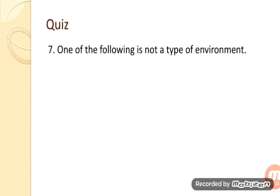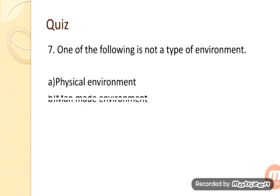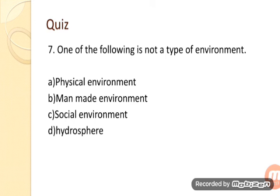Question 7: One of the following is not a type of environment. Option A: Physical environment. Option B: Man-made environment. Option C: Social environment. Option D: Hydrosphere. The correct answer is D — Hydrosphere. Hydrosphere is a segment of the environment, not a type.